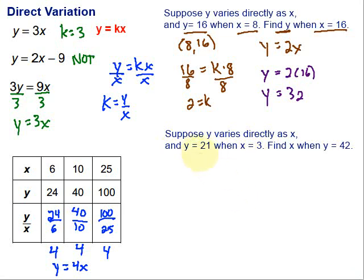So then we look and find that ordered pair that we're given. It says y equals 21 when x equals 3. So remember we could think of that as an ordered pair. It is an ordered pair. 3, 21. Then what I'm going to do is go ahead and plug those things in to my direct variation equation.